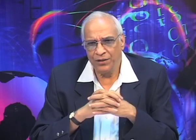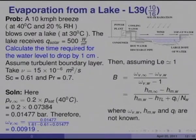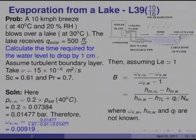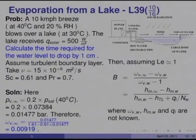The fourth problem: a 10 km/hr breeze at 40°C and 20% RH blows over a lake whose water temperature is 30°C. The lake also receives average solar radiation of 500 W/m². Calculate the time required for the water level to drop by 1 centimeter.